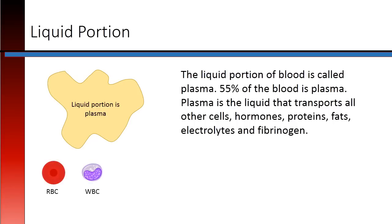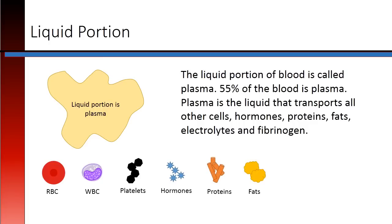The liquid portion of blood is called plasma. 55% of the blood is plasma. Plasma is the liquid that transports all other cells, hormones, proteins, fats, electrolytes, and fibrinogen.